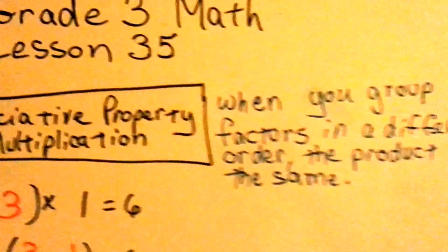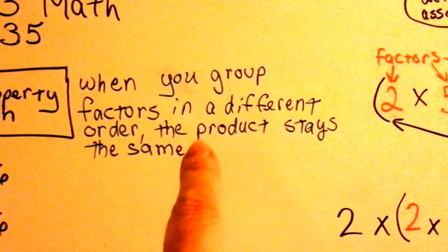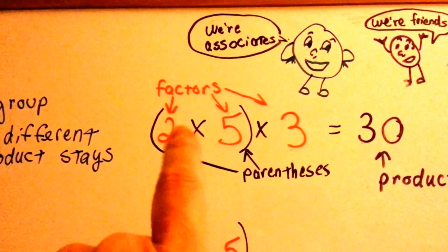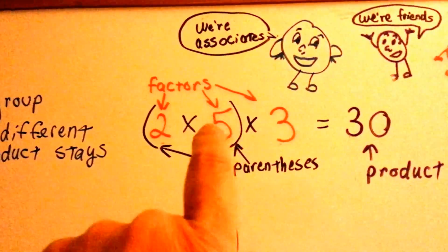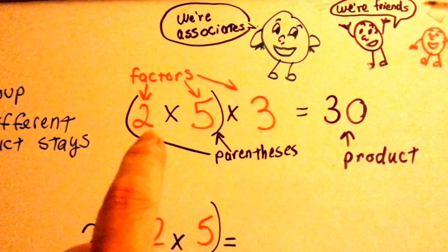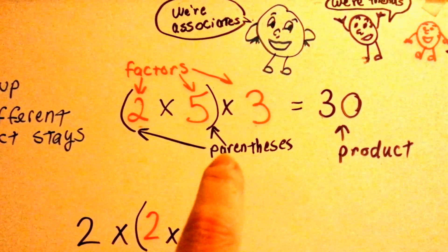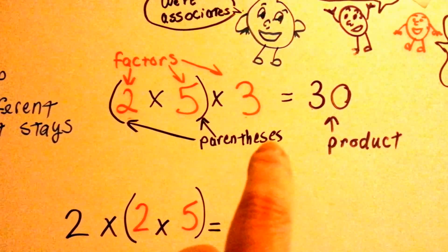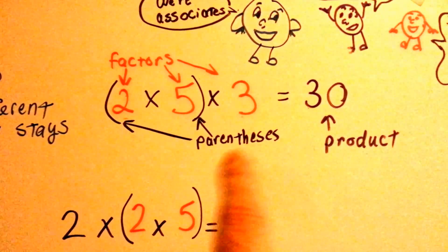The associative property of multiplication says when you group factors in a different order, the product stays the same. The factors are the numbers that you multiply together. The product is the answer, and then you've got parentheses. P-A-R-E-N-T like parent, he says, S-E-S. That's how you spell parentheses.